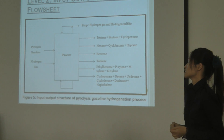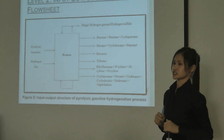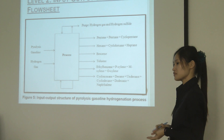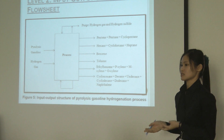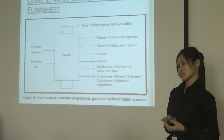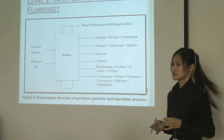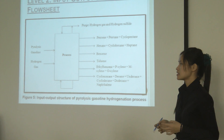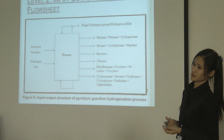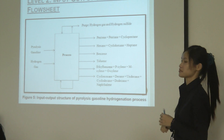In level two, which is the input and output structure of the flowsheet, before we can come up with this flowsheet, there are five decisions to consider: whether purification of the feed is required, whether a reversible product is being produced, whether any recycling is required, whether it is necessary to recycle the unreacted reactant, and how many products there will be. After completing all these decisions, we come up with this input and output structure.